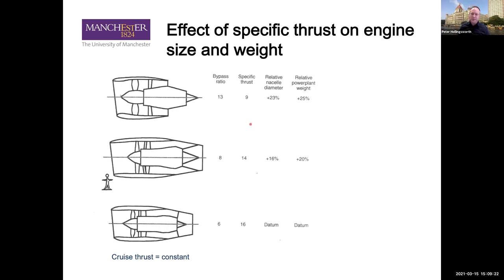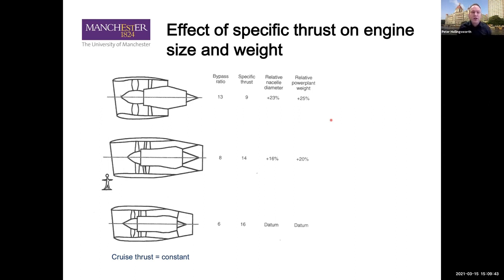Question four: what technology component limits the overall pressure ratio of an engine? You all focused correctly — it's the compressor. As we compress air we increase its temperature, so at the final stage with the highest pressure ratio we have the highest temperature, and that's the limiting factor. We cannot put cooling channels in the compressor — does anyone know why?